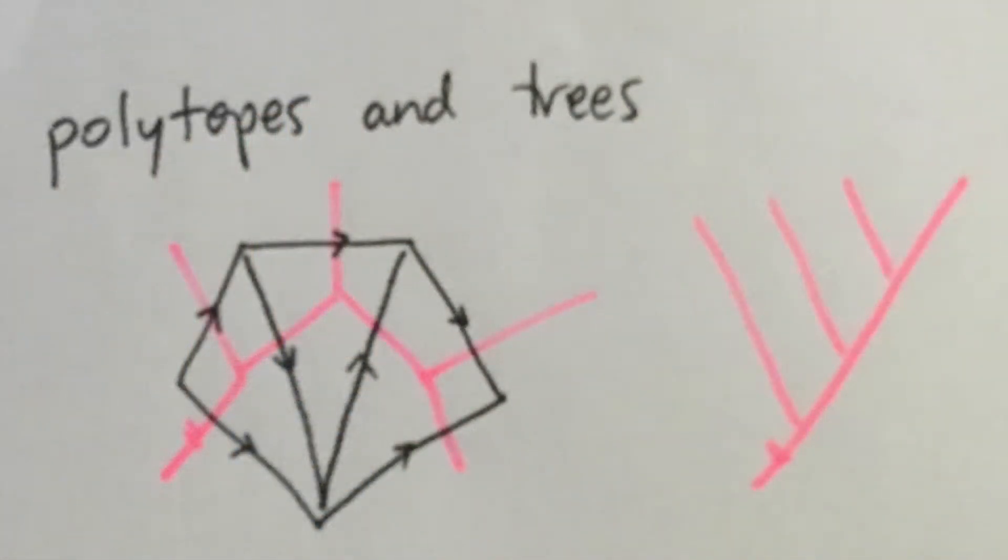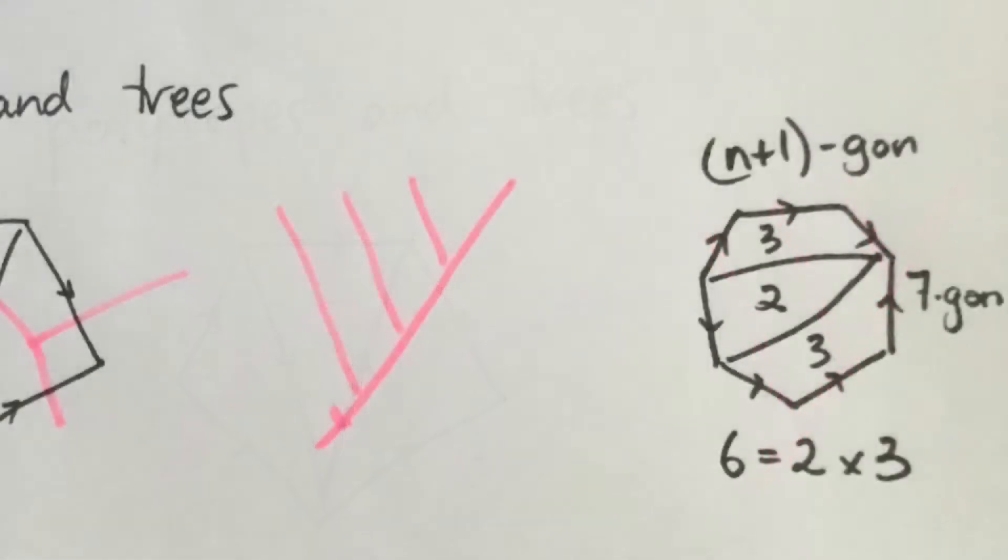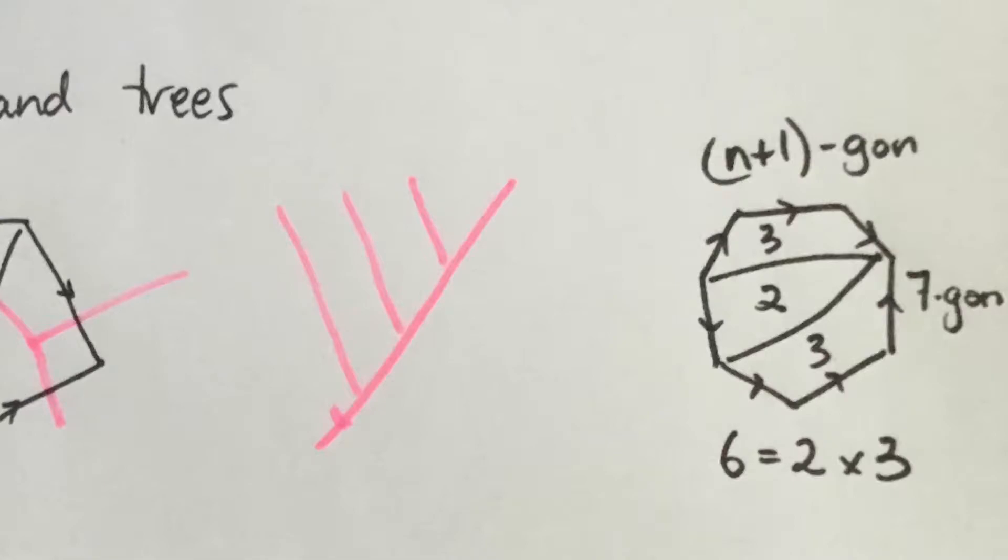In two dimensions we can draw a closed polygon with any number of sides. Here we have the pentagon with 5 sides. These shapes are associated to trees as shown in this example here. 5 sides represents the number 4 and in general n plus 1 sides represents the number n.